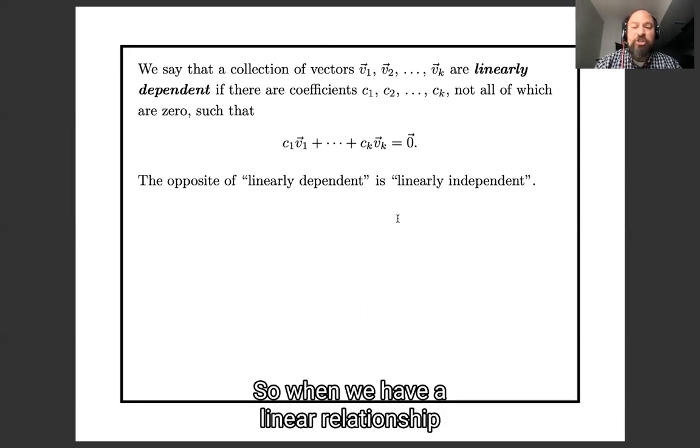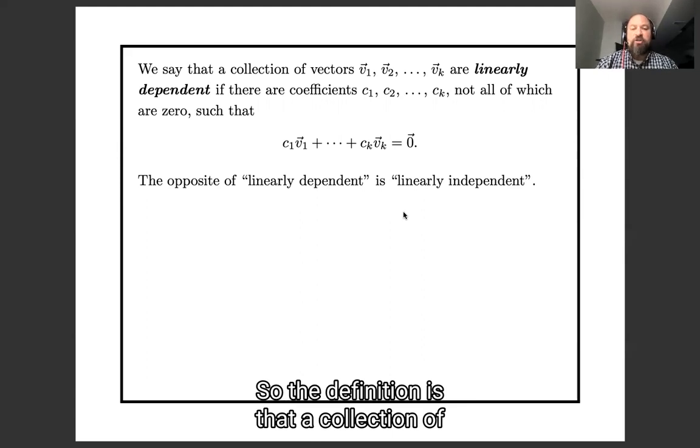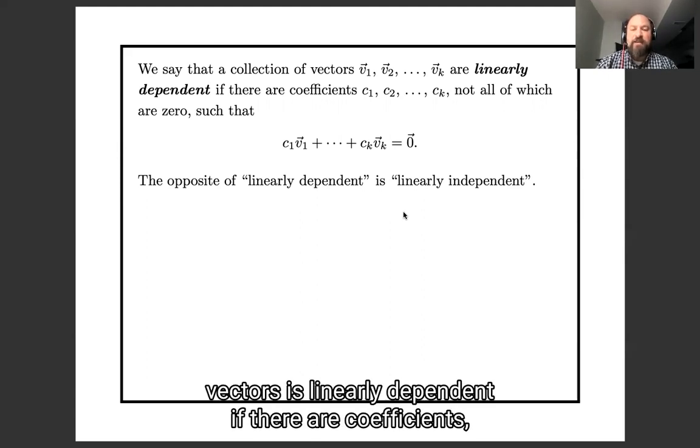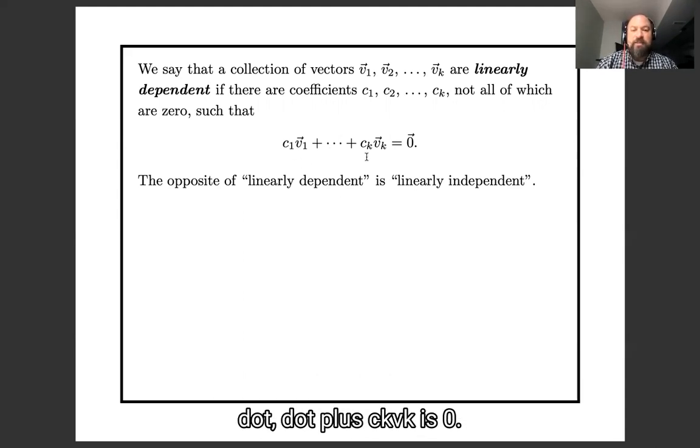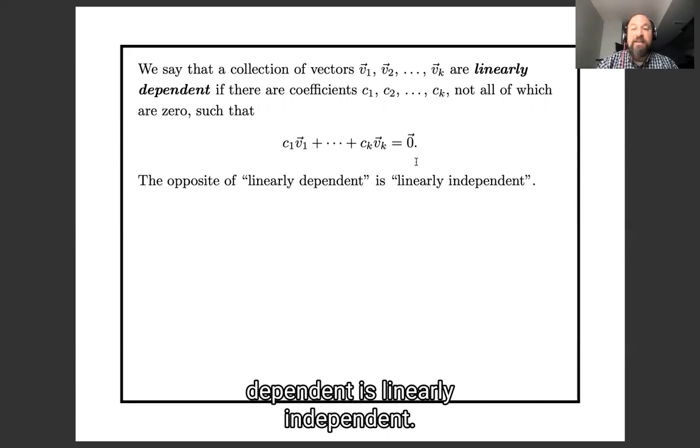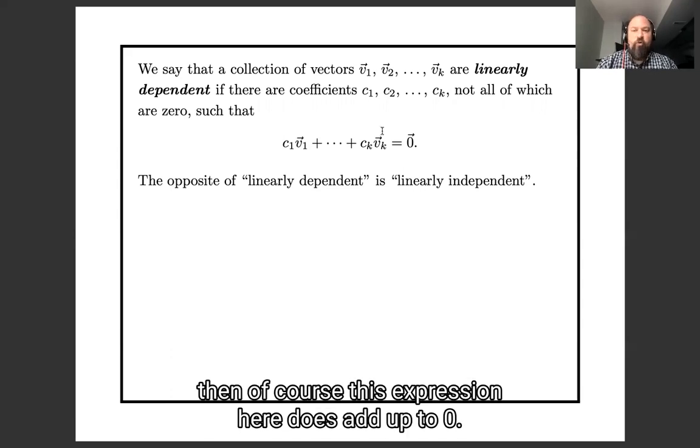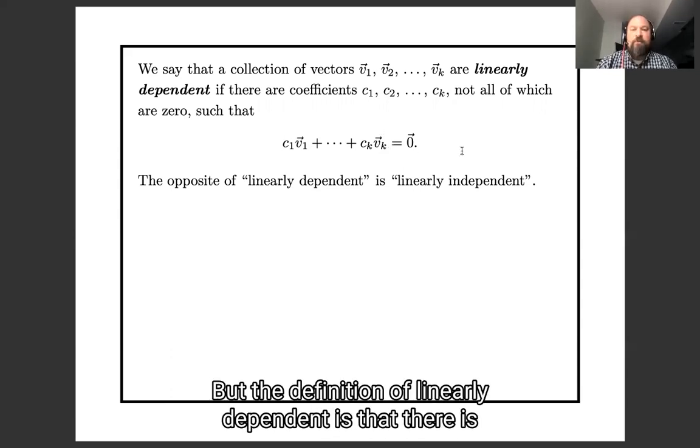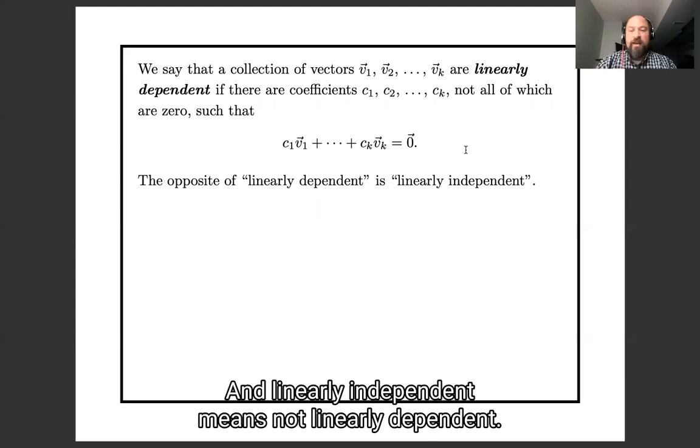So when we have a linear relationship like this one on this past slide, we say that the vectors are linearly dependent. So the definition is that a collection of vectors is linearly dependent if there are coefficients, not all of which are zero, such that c1 v1 plus dot dot dot plus ck vk is zero. And the opposite of linearly dependent is linearly independent. Of course if the c's are all zero, then of course this expression here does add up to zero, but the definition of linearly dependent is that there is some other relationship besides that obvious one, and linearly independent means not linearly dependent.